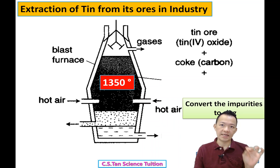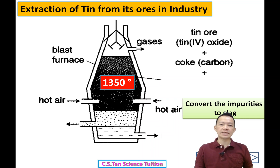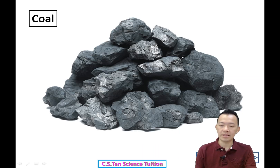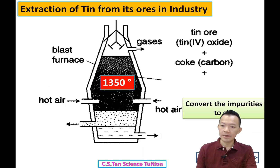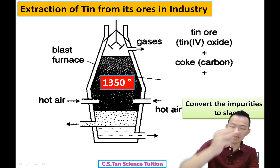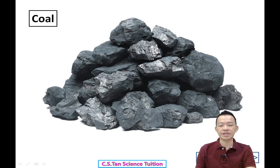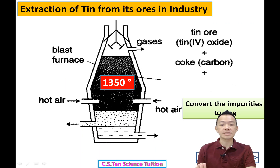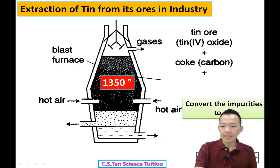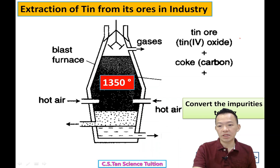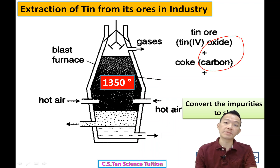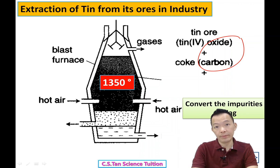So tin ore is added into the Blast Furnace. Now what we need to add? We need to add the carbon. Where does the carbon come from? Sarawak, or anywhere. So carbon is added into the Blast Furnace. The chemical reaction starts — carbon is more reactive compared to tin, so carbon will join together with oxygen and become carbon dioxide.